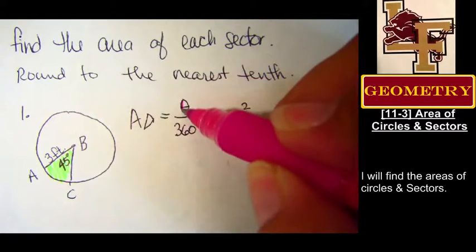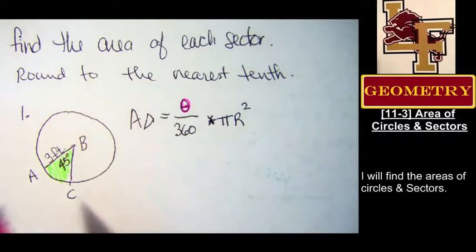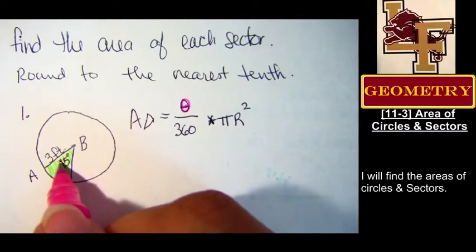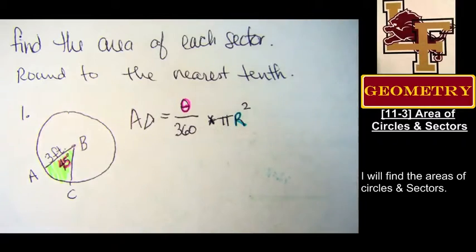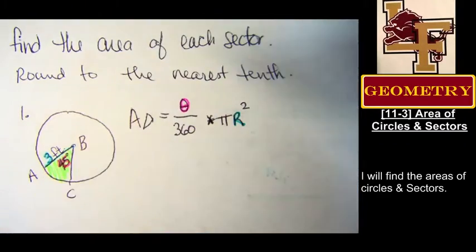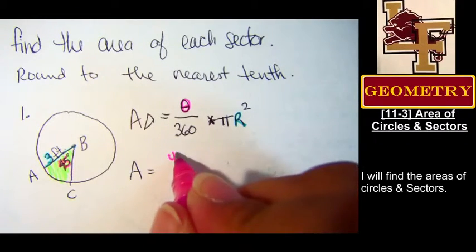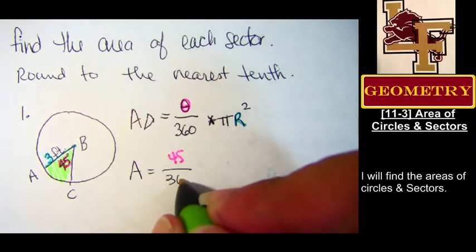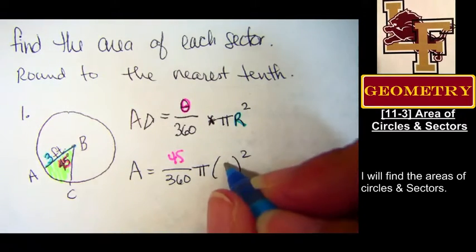Do we have the measure of the central angle? Yeah. We do. Here it is. Do we have the radius of this pizza? Yes, it's right here. All right, we're going to substitute. Area of the sector equals 45 degrees divided by 360 times pi times 3 squared. And we're going to stick that in the calculator and get a number and round it to the nearest tenth. Go. 3.5.